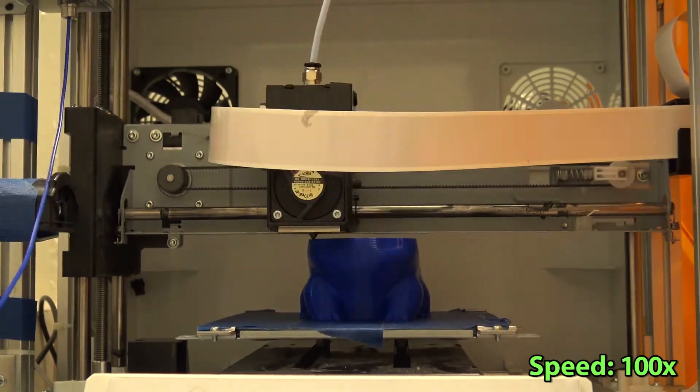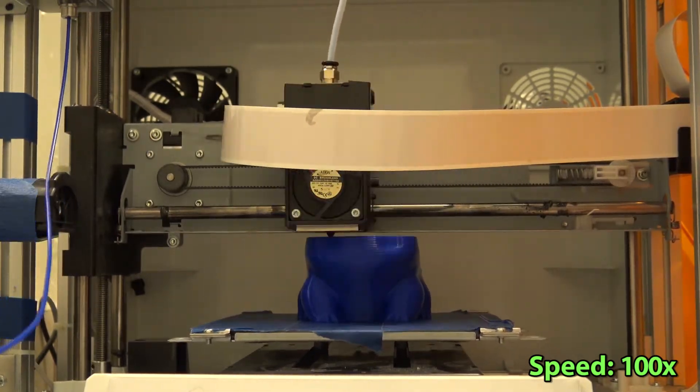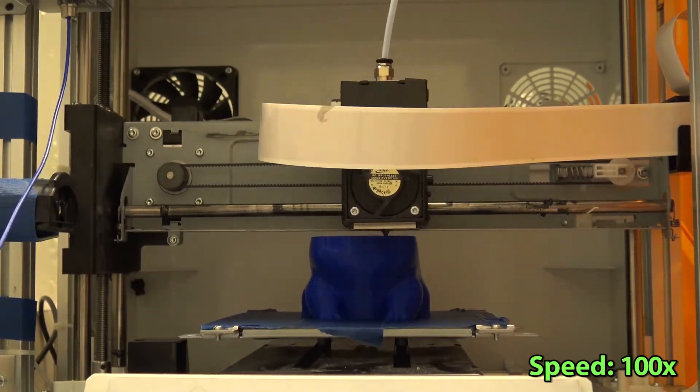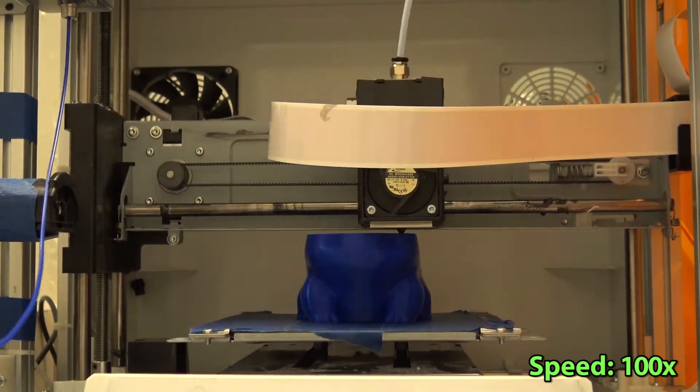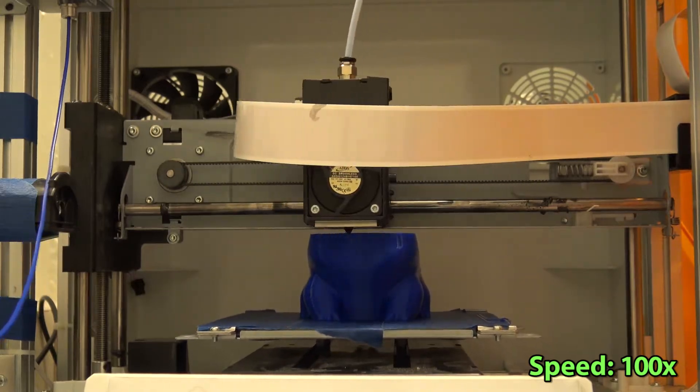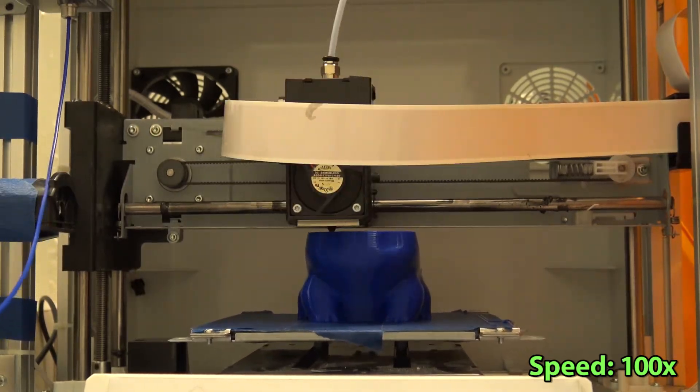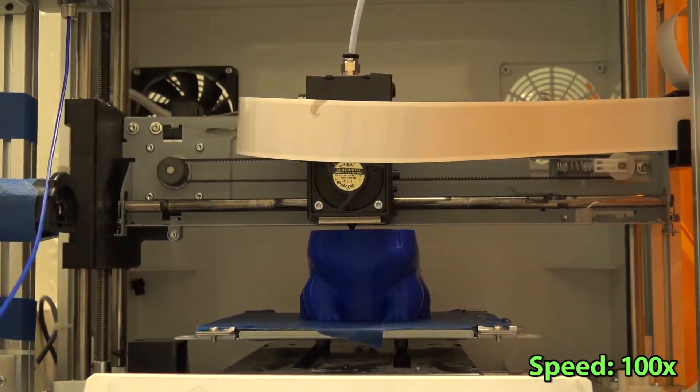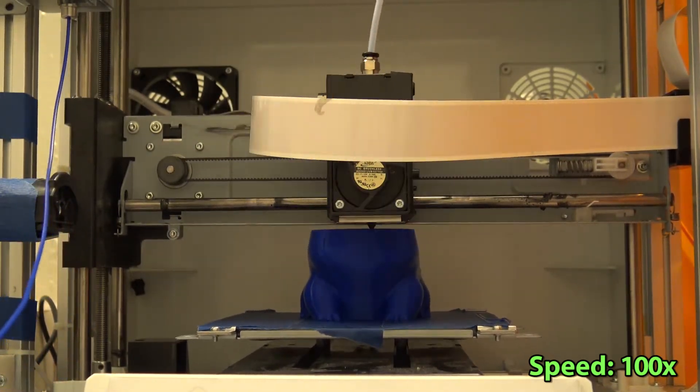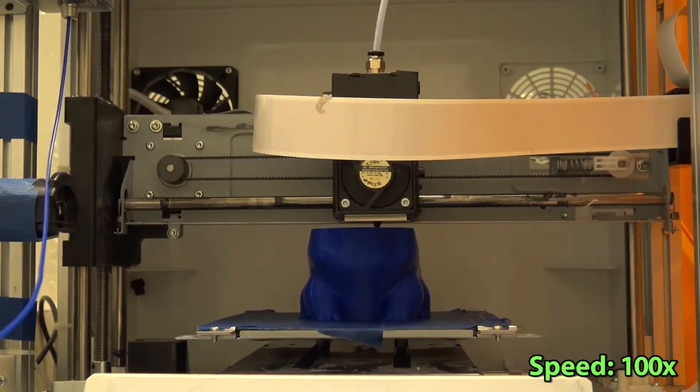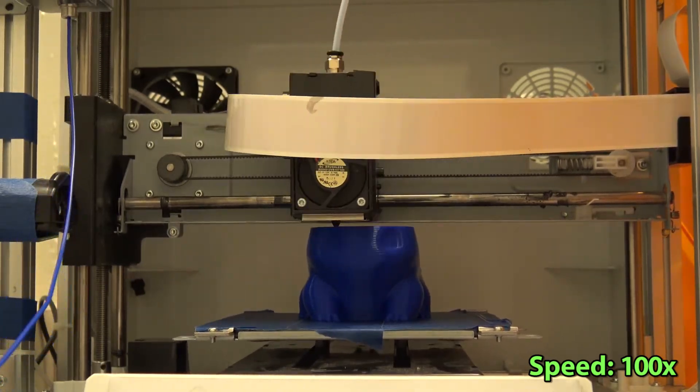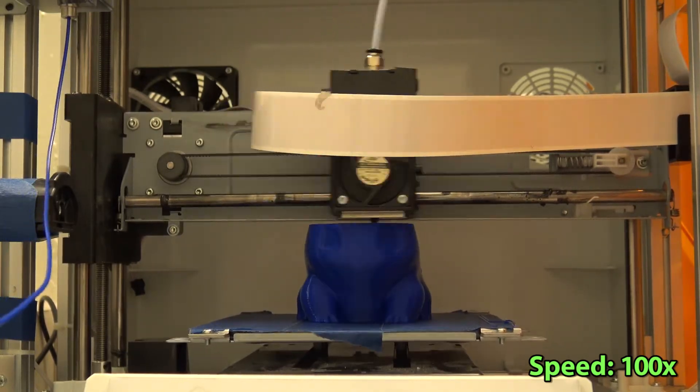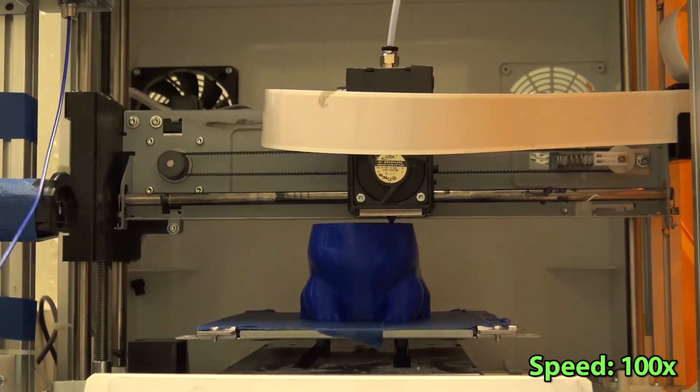ABS is very soluble in acetone. So if you print in ABS you just have to leave your 3D printed statue inside a box or glass container that has acetone in the bottom and then the acetone vapor will melt all the external layers of the 3D printed statue. All these layers will fuse together, making a much more even surface and removing all the imperfections.